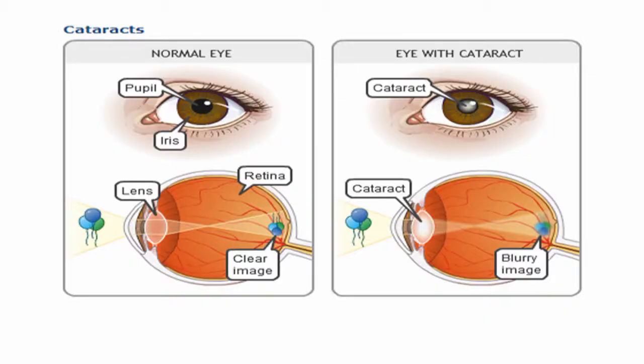A cataract is any amount of opacity or cloudiness of that lens. When it becomes an obstruction to the light travelling through the eye and then falling on the retina — so that we can achieve vision — we would then say it's a cataract.